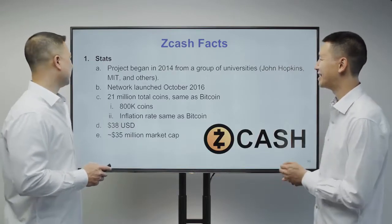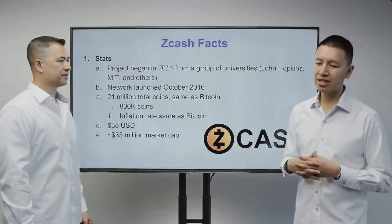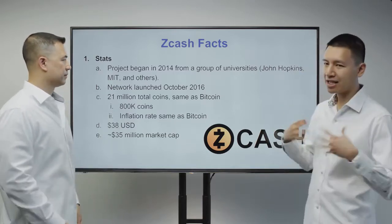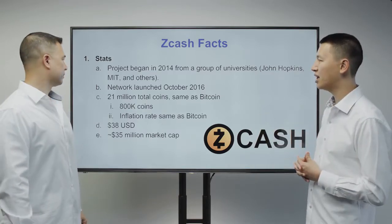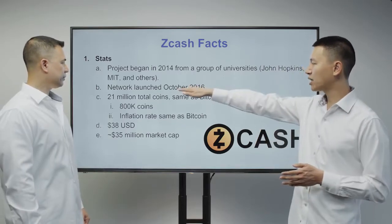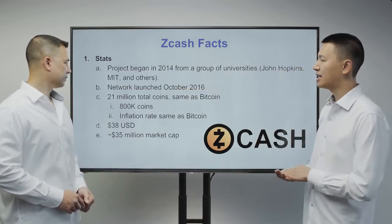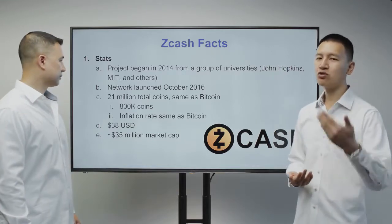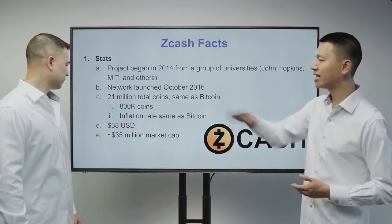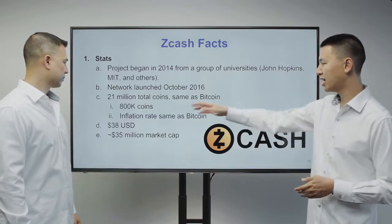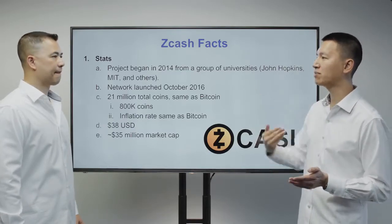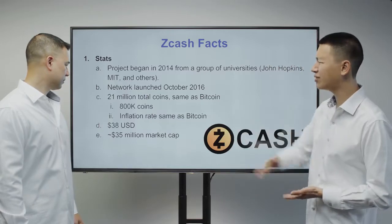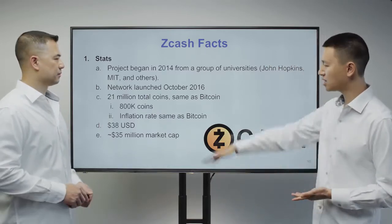Some Zcash facts: the project started as a research project at universities including Johns Hopkins and MIT. The network was launched in October 2016. It is based on Bitcoin and will issue the same number of coins as Bitcoin. Currently there are about 800,000 coins in circulation. It's currently trading at around $38, giving it a market value of roughly $35 million.